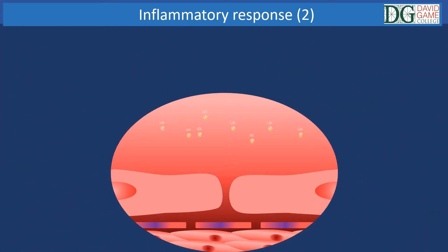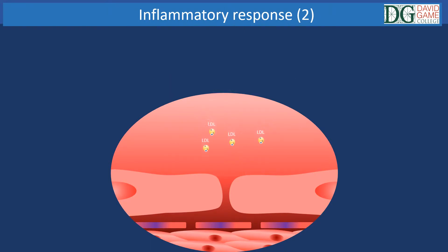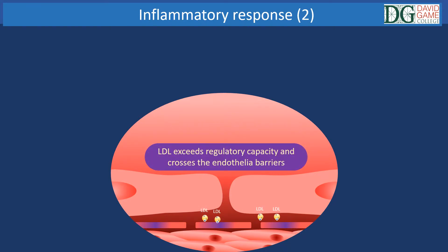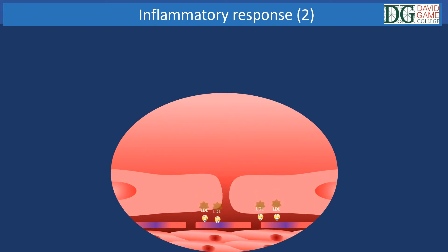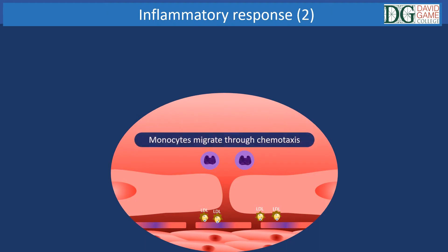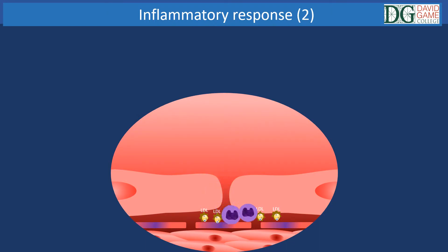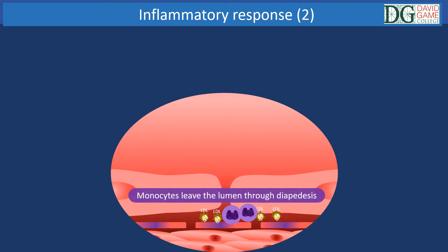LDL cholesterol binds to the LDL receptors and is absorbed through endocytosis. However, when the level of LDL cholesterol is high, it exceeds the regulatory capacity and crosses the endothelial barrier. It starts to accumulate and becomes oxidized because of the free radicals present in the blood vessels. Subsequently, white blood cells, in particular monocytes, migrate to the area through chemotaxis, which is a chemical stimulation from the damaged cells.